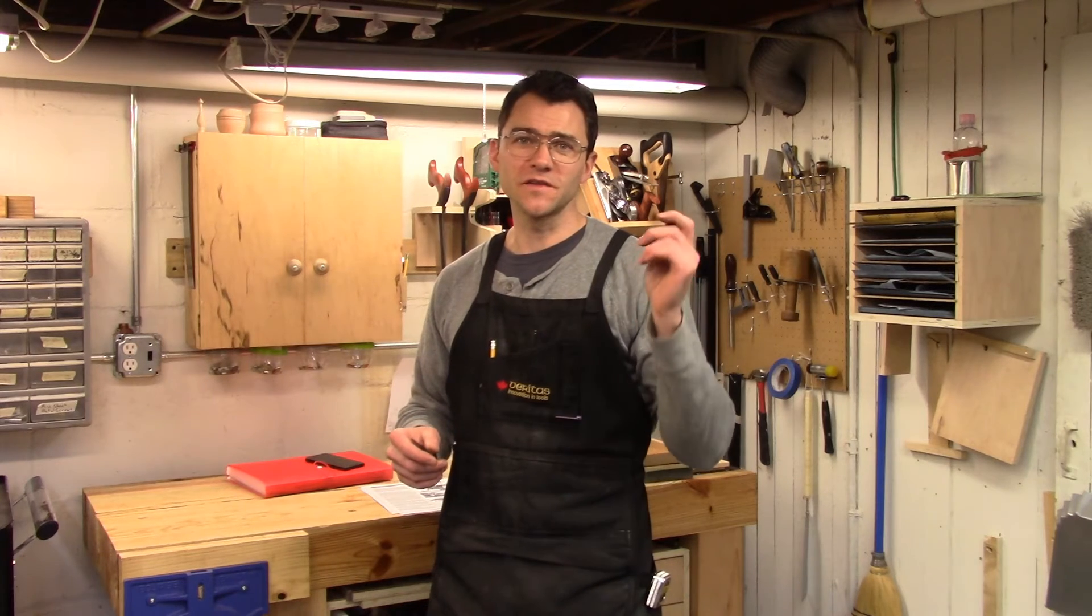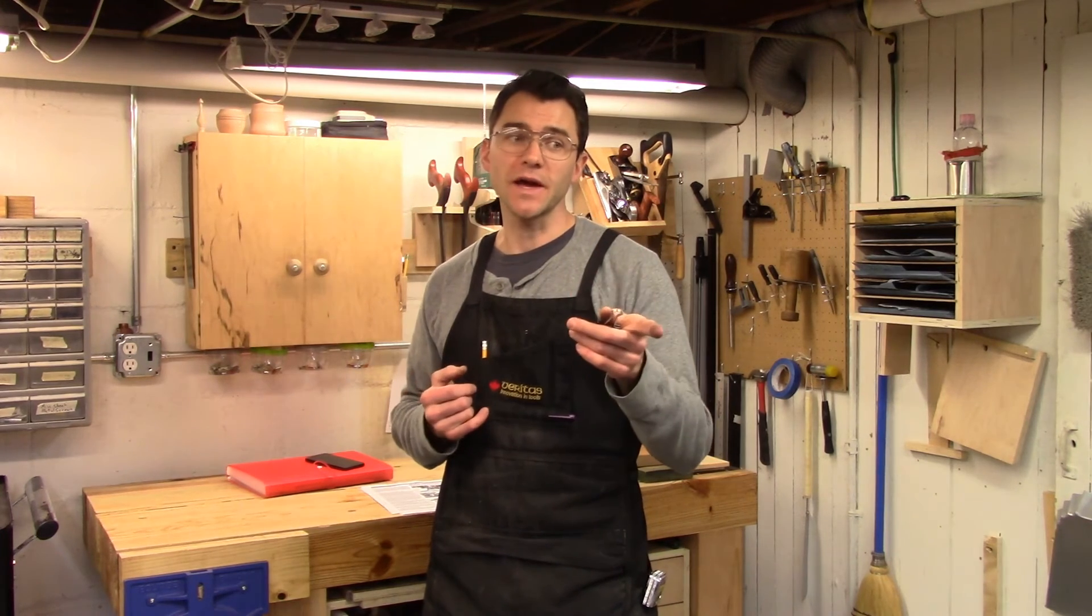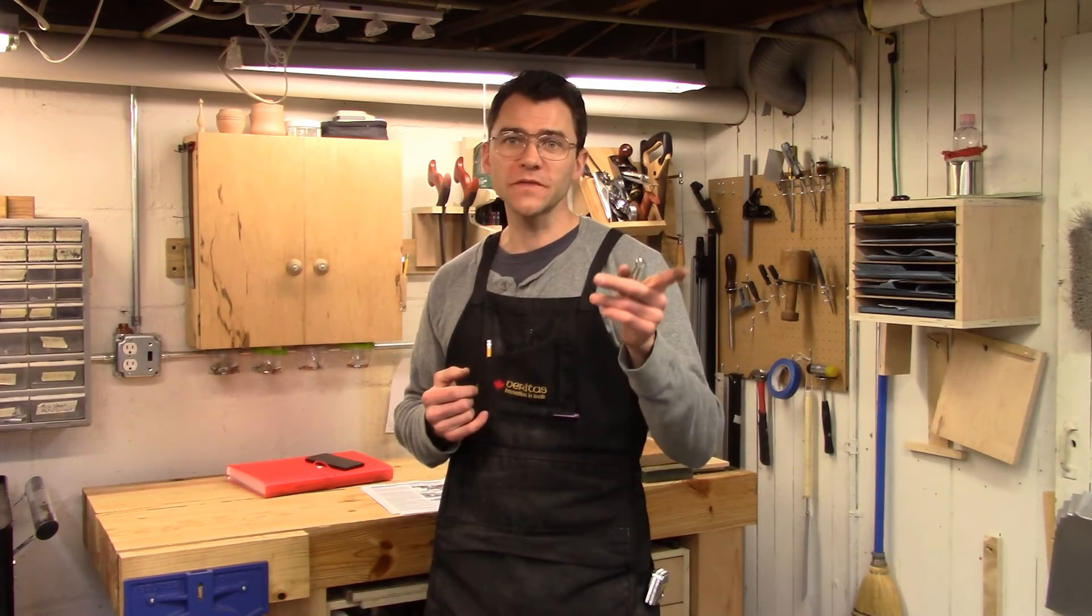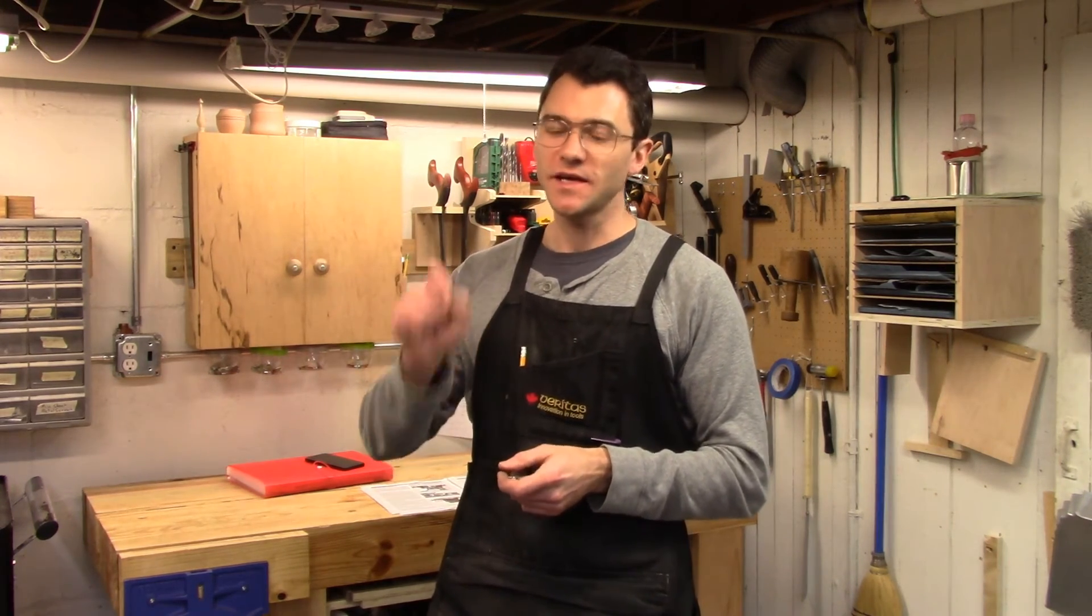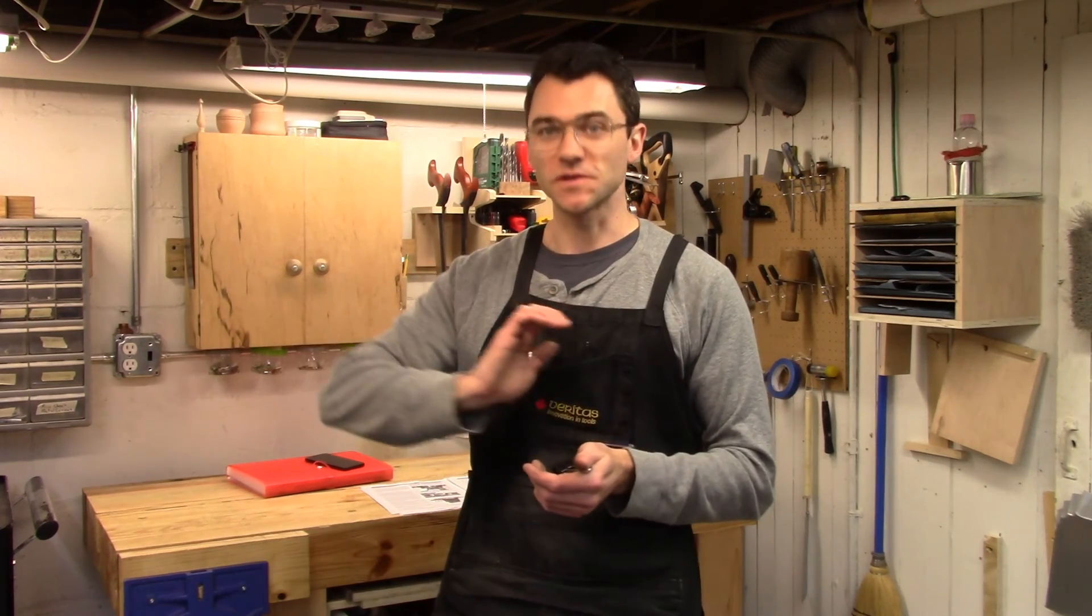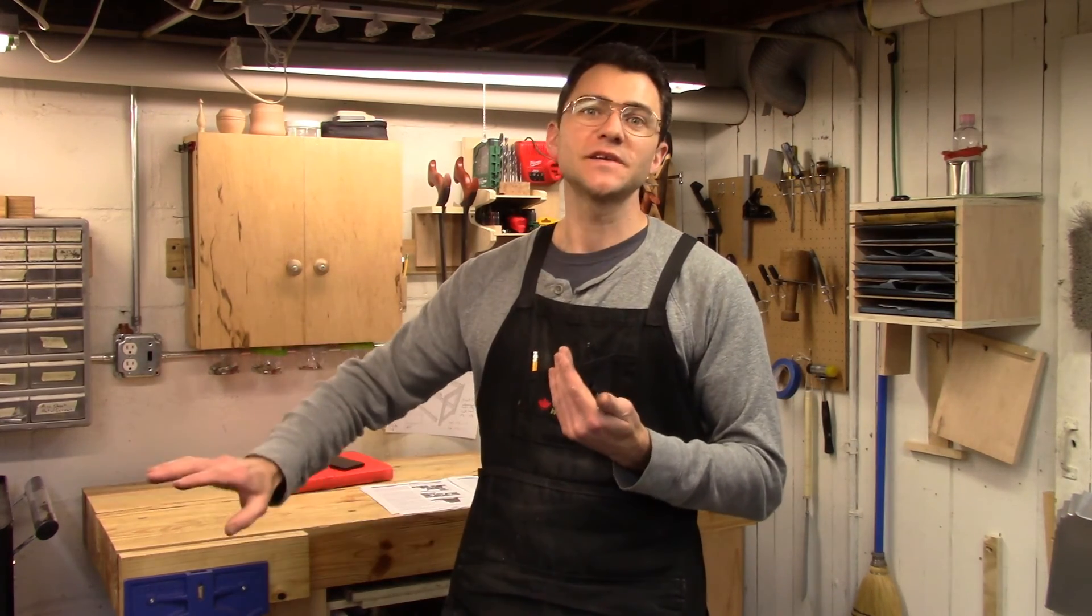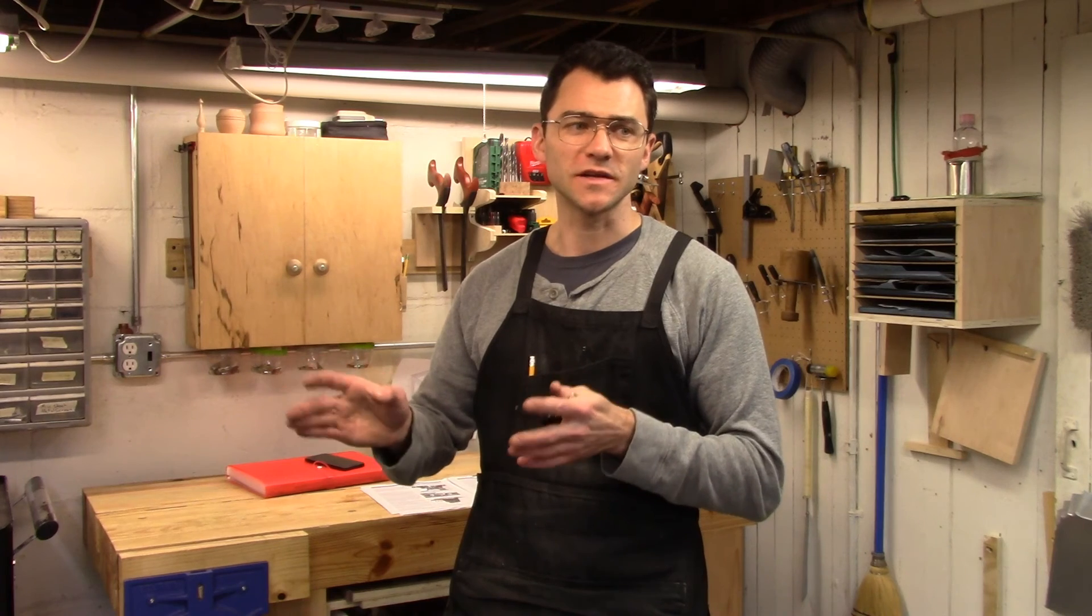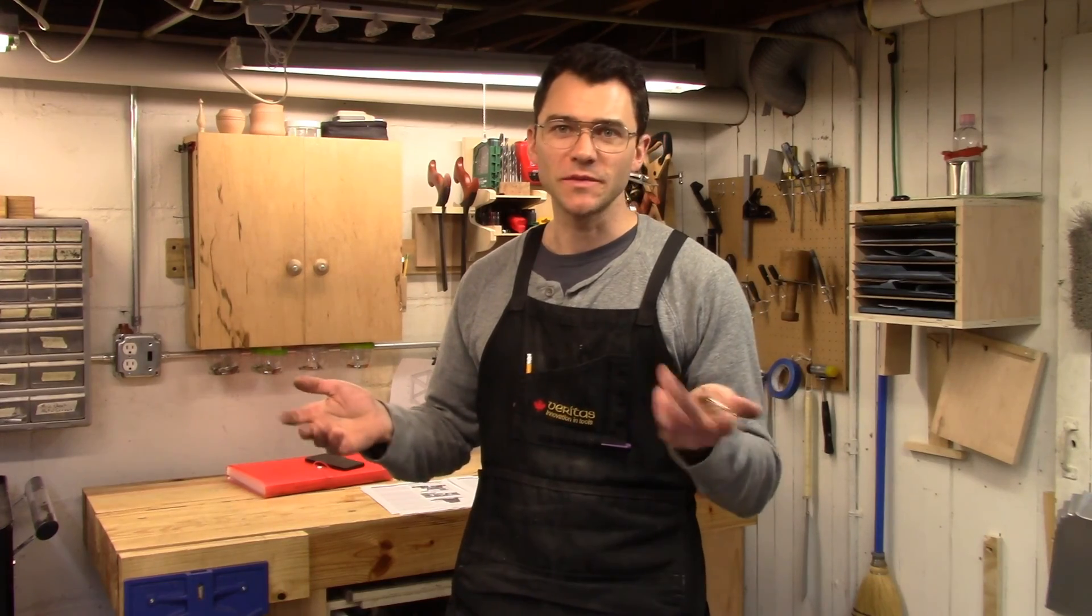So if you have this Rikon jointer or a similar model like the Jet jointer planer, check out that chain in back. If you look at the design of that idler pulley, you'll notice that it is on the tension side of the chain. And so consequently, the idler pulley is going to have a tremendous amount of sideways force on it, pushing it towards the loose position. But normally, an idler pulley is on the non-tension side of the chain, so it doesn't have those same forces exerted on it. So kind of a bad design, but it's something you can at least anticipate and maybe check once or twice a year. Well, thanks for watching guys. I hope this helped you.